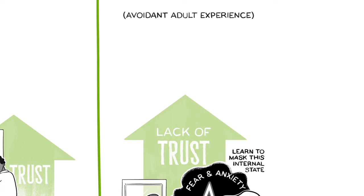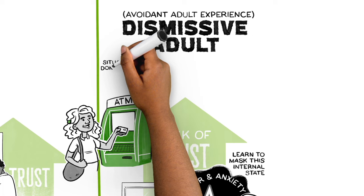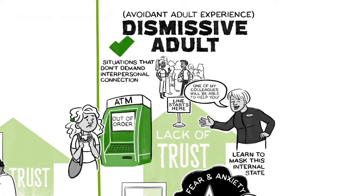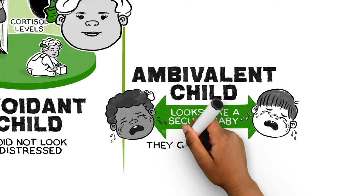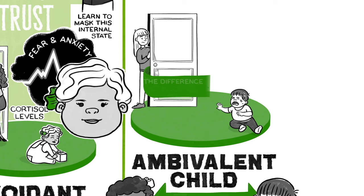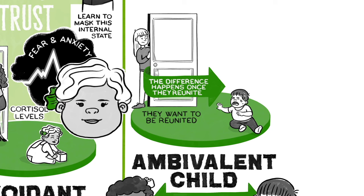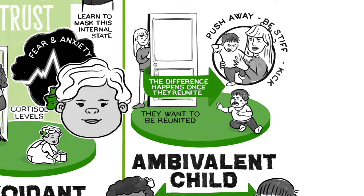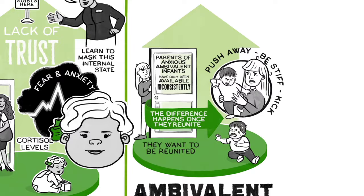A person may do fine in situations that don't demand interpersonal connection, but when they demand that connection, they begin to flounder. An ambivalent baby looks like a secure baby and can be hard to distinguish — both babies are distressed when the attachment figure leaves. The difference is what happens once they reunite. An anxious, ambivalent baby wants to be reunited, but once picked up, they may push away, be stiff, or kick their feet. Research shows that parents of anxious, ambivalent infants have only been available inconsistently.